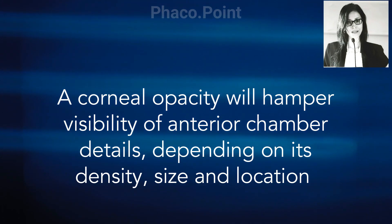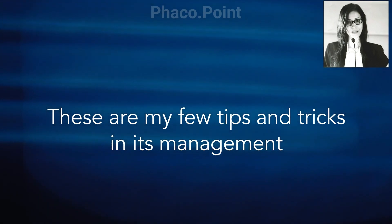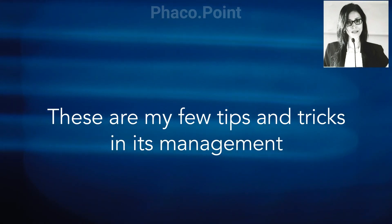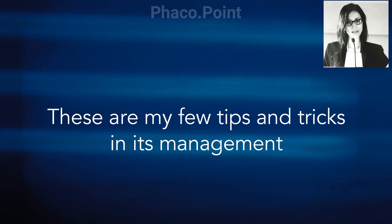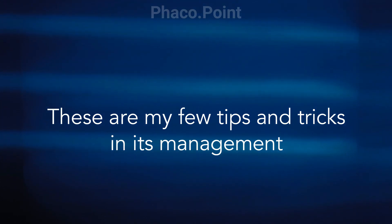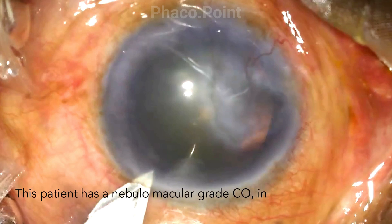Here are a few tips, tricks and largely the principles that I follow when managing a patient with a corneal opacity and a cataract. Here's a patient who presented with a soft cataract but also had an associated central to paracentral corneal opacity.